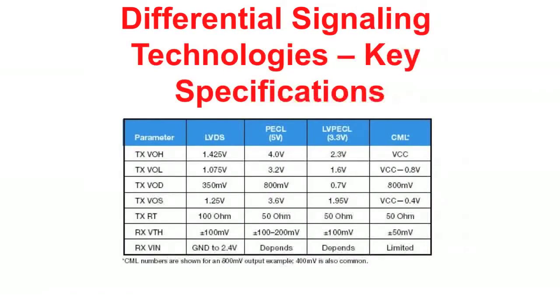Let us discuss the characteristics of LVDS and PECL signals as summarized in the table. LVDS provides the smallest swing of 350 millivolts and a common mode range of plus or minus 1 volt around its VOS. As a result, LVDS has limitations when trying to drive high-frequency signals over a given media.